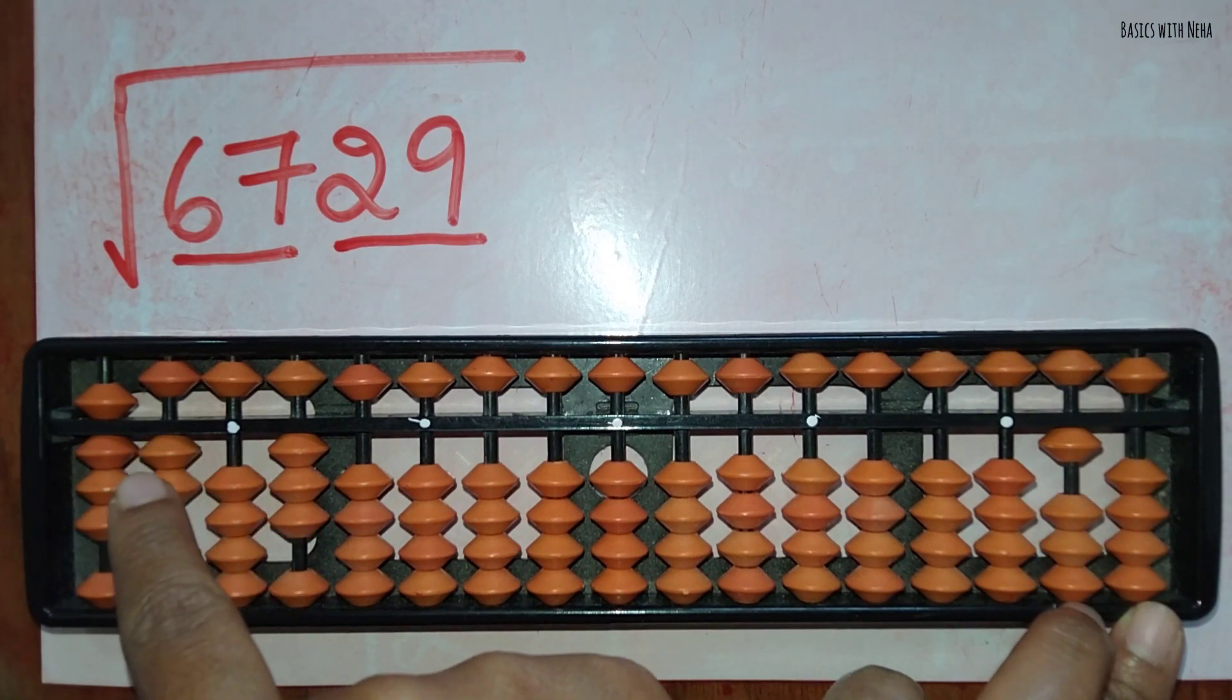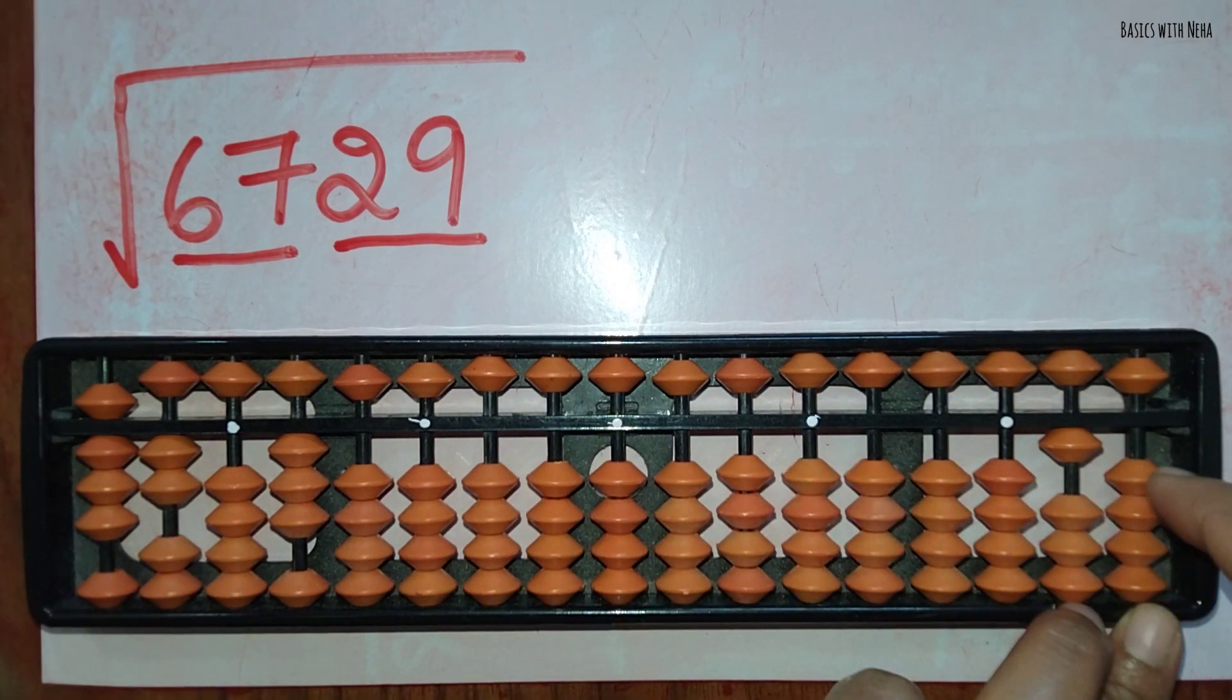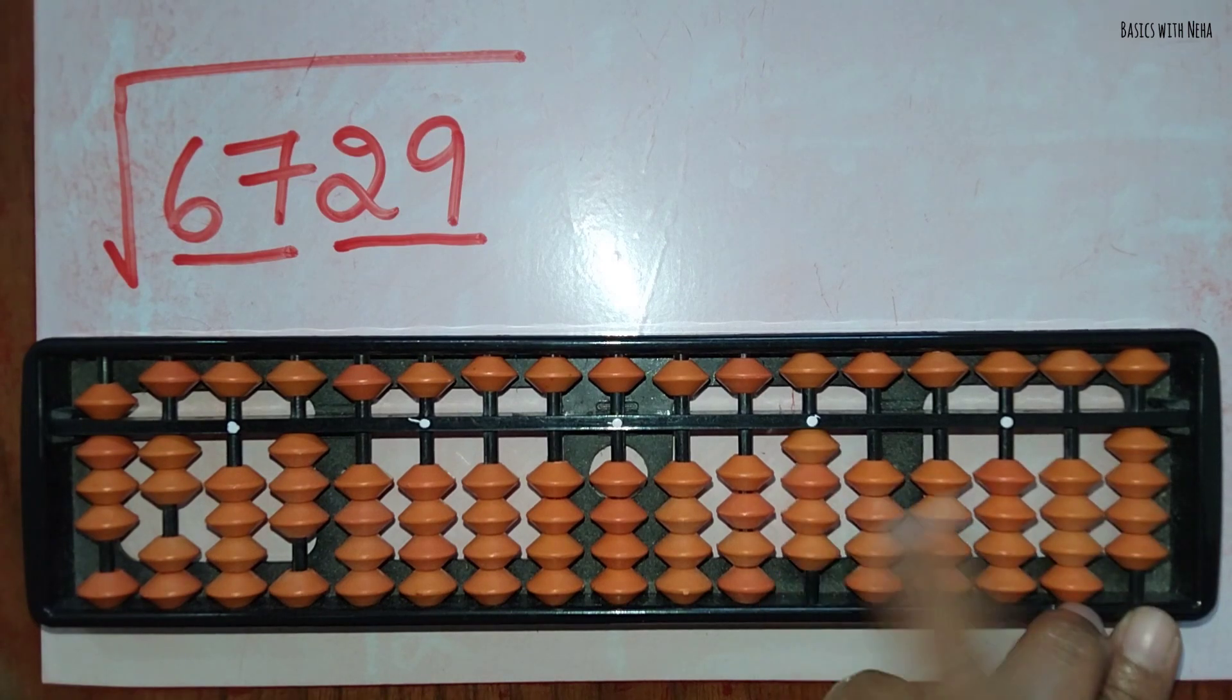Now three twos are six, so I can take it. I have to remove six four, so I'm going to take this four here.